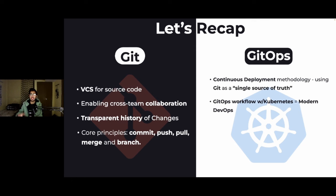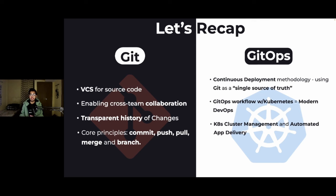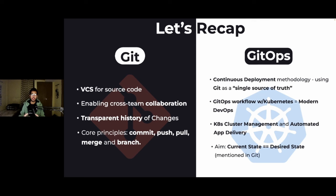When we talk about GitOps with Kubernetes, it's used to manage your Kubernetes cluster, helping with cluster management and automating the process of application delivery so it's resilient, fast, and you can quickly deliver the product to your end user. The main aim is to compare the current state with the desired state. The desired state is declaratively defined in Git, and then a reconciliation loop compares the current state of the Kubernetes cluster to what we have defined in Git, ensuring alignment.